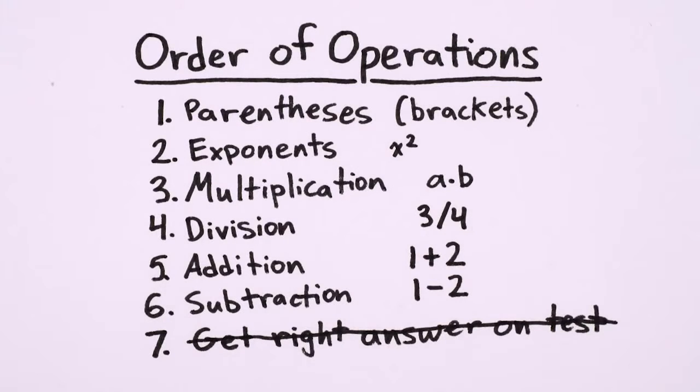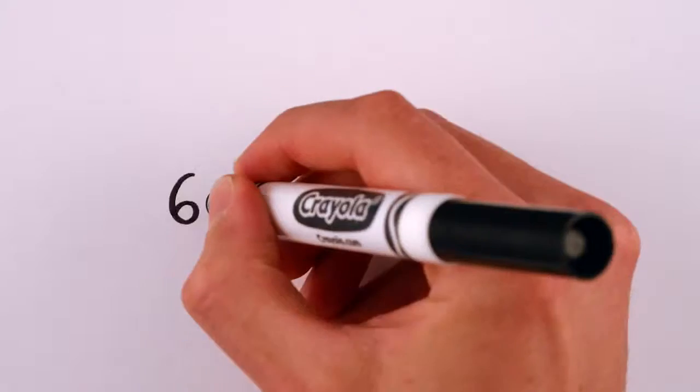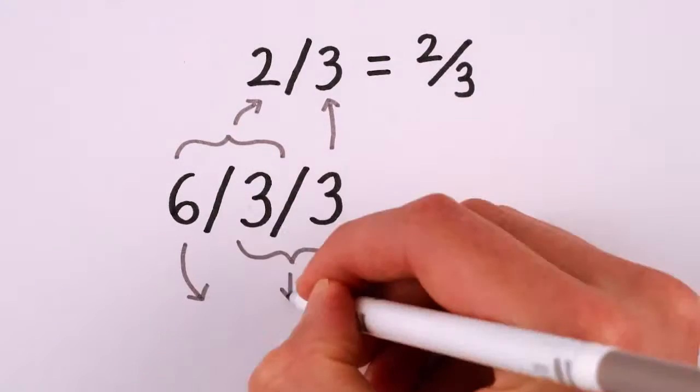Except, you don't always get the right answer, or even one answer. I mean, is 8 minus 2 plus 1 equal to 5, or 7? And is 6 divided by 3 divided by 3 equal to 2 thirds, or 6?